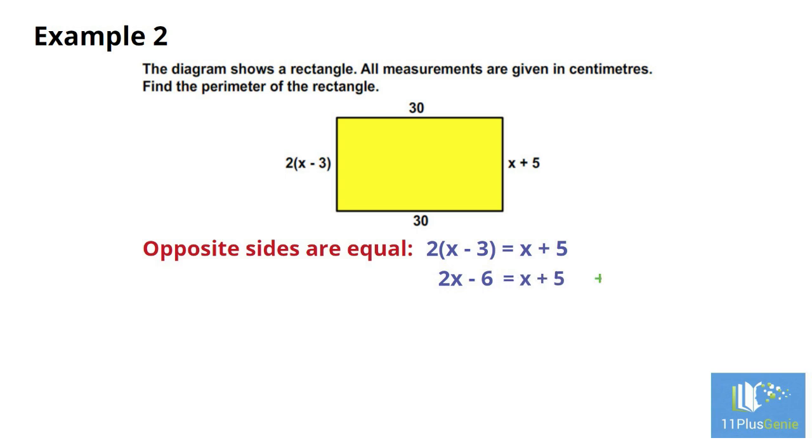We add 6 to both sides of the equation to simplify it to 2x equals x plus 11. We now subtract x from both sides to get x equals 11.